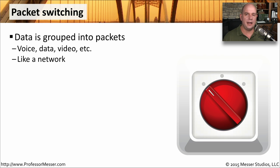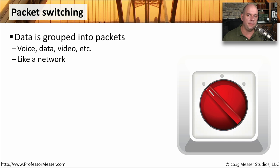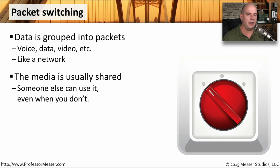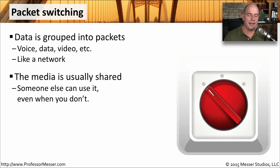Packet switching is how we think of networking today. We take our data, put it into a wireless or wired network, and send the traffic on its way — it finds its way to its destination. This might be data, video, or voice; it doesn't matter. We send this data out over the network and it finds its way, switching based on what's in the packet. Usually this media is shared — many people sharing a connection to the internet, and the internet links themselves shared between locations. That way, when we're not using the connection, someone else can certainly be using exactly that connection.